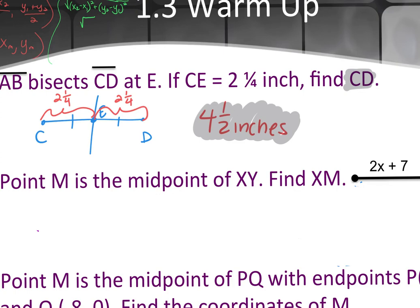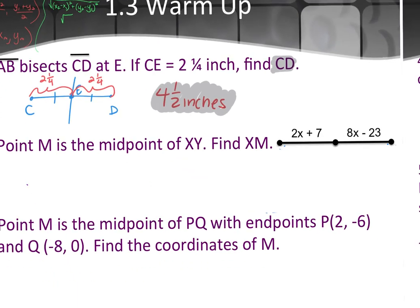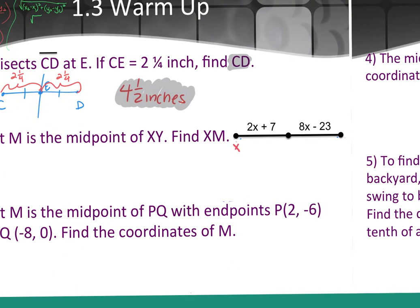Number 2 said point M is the midpoint of XY. Find XM. This should have been XY and this is M. Is that like that on yours? No. Okay. That's what it should have been. So if it's the midpoint, it cuts it into two congruent segments. What do I do?